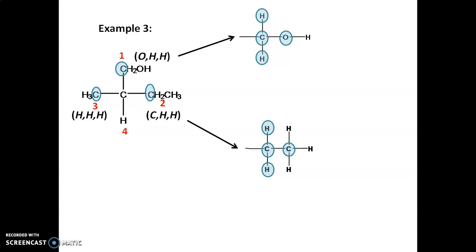The fourth priority — the lowest priority group — is already at the bottom, so there is no need to exchange. Going directly from 1 to 2 to 3, it is in the clockwise direction, so the answer is R configuration.